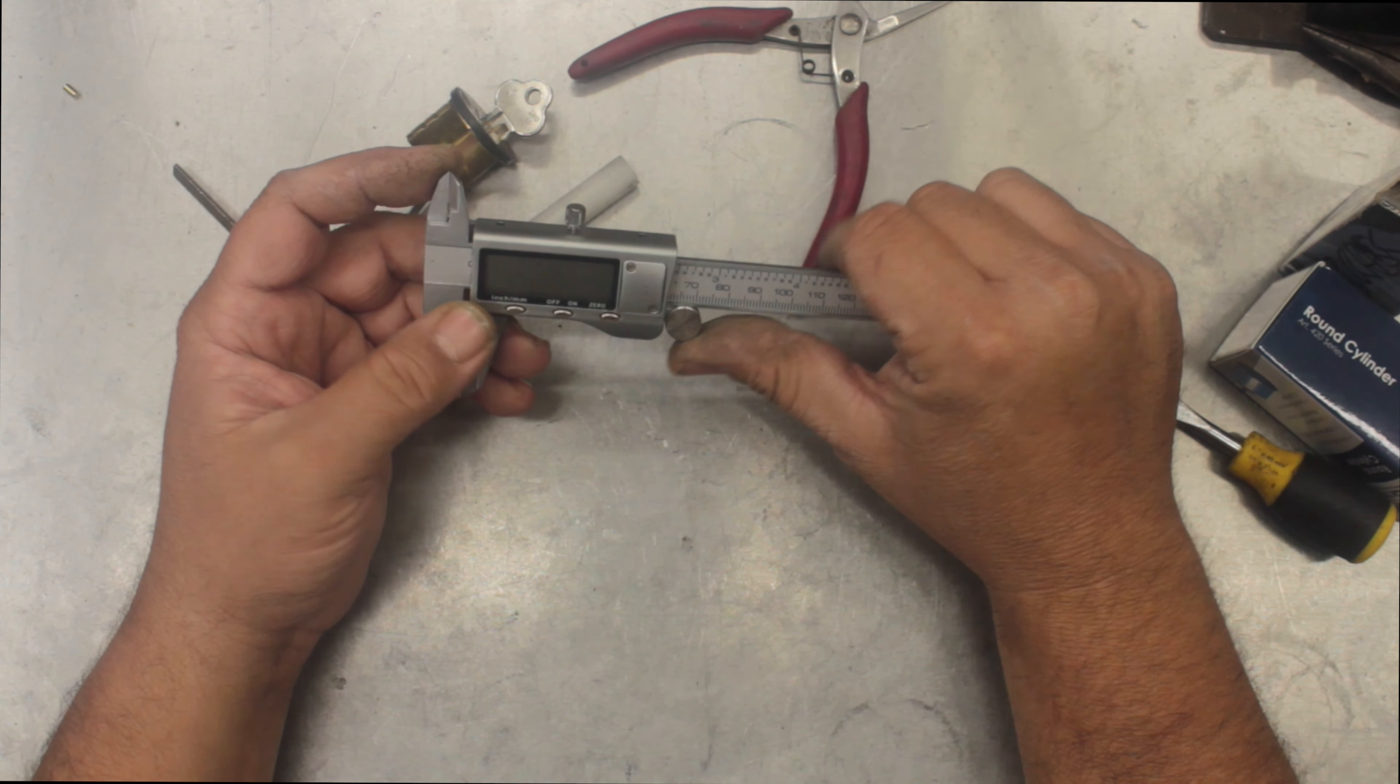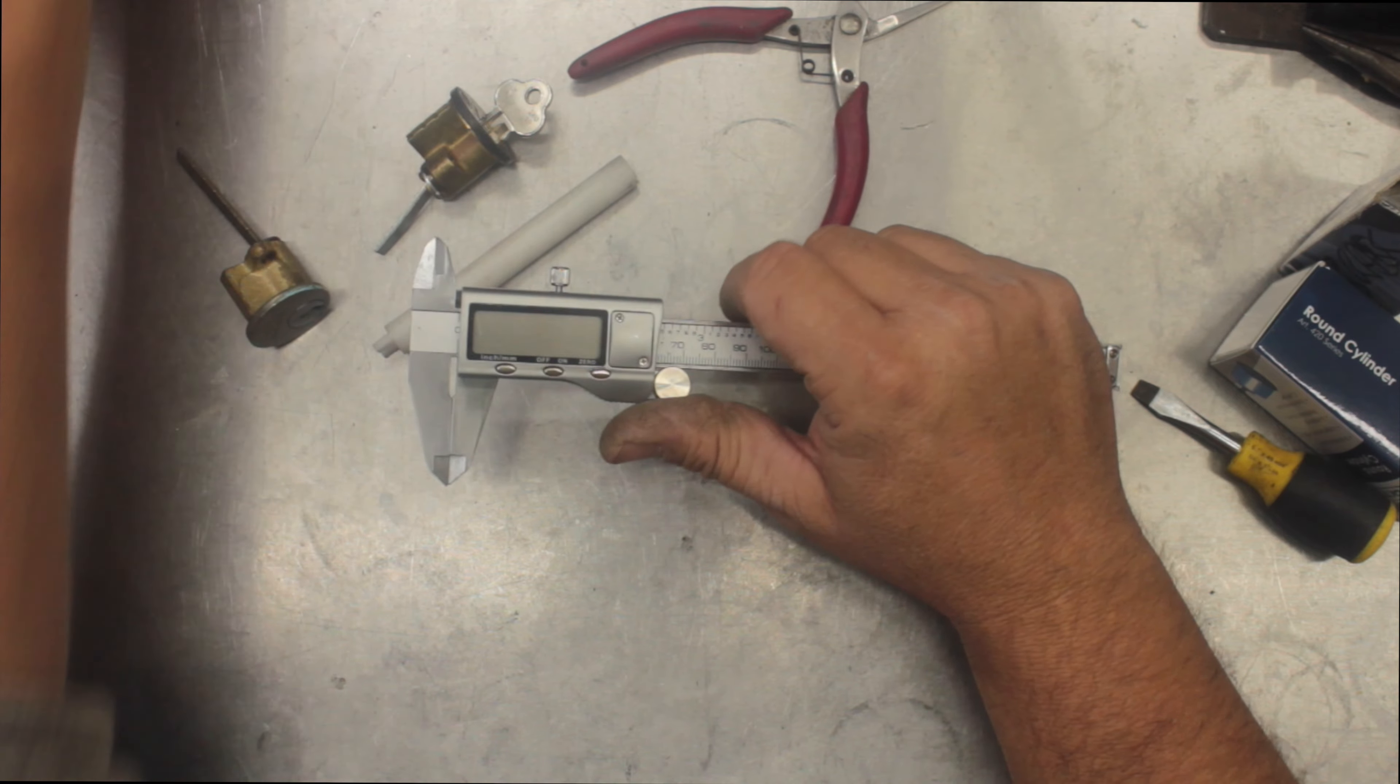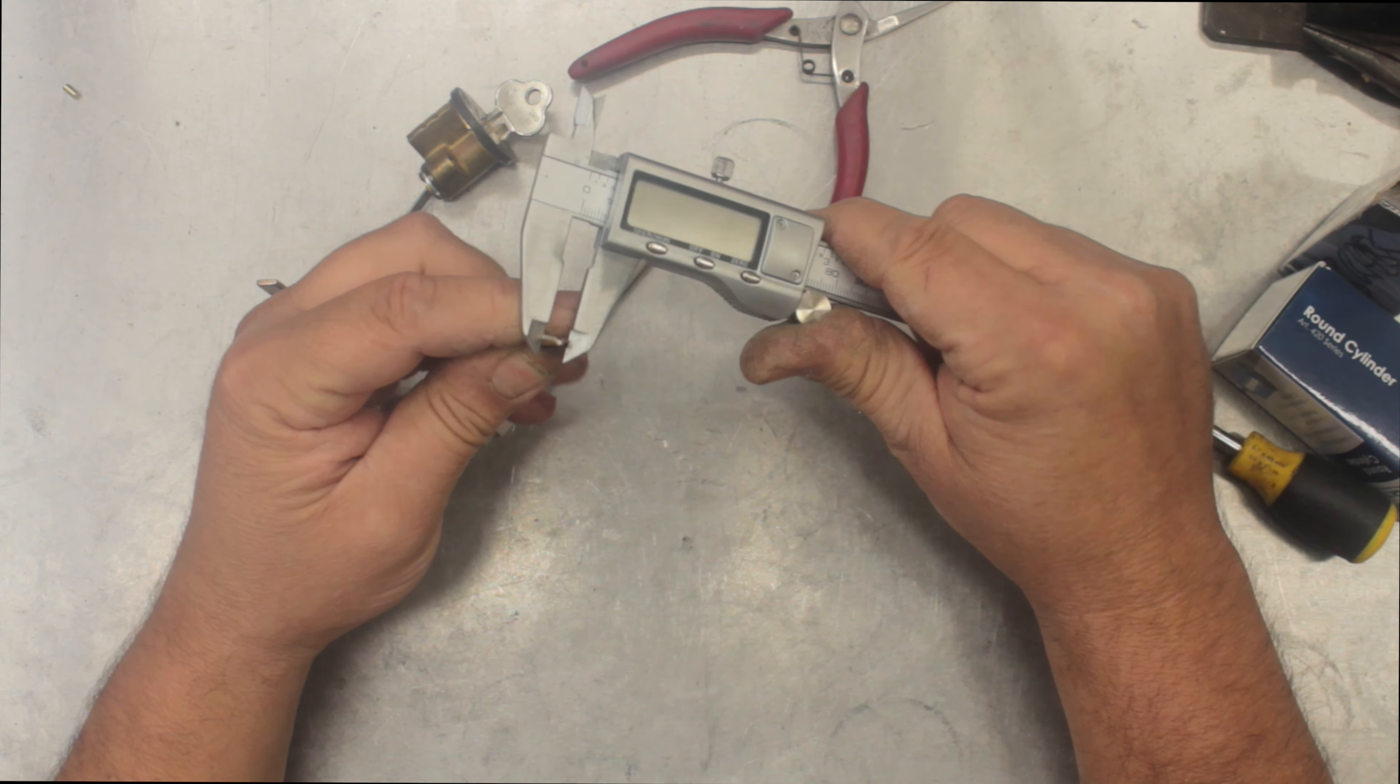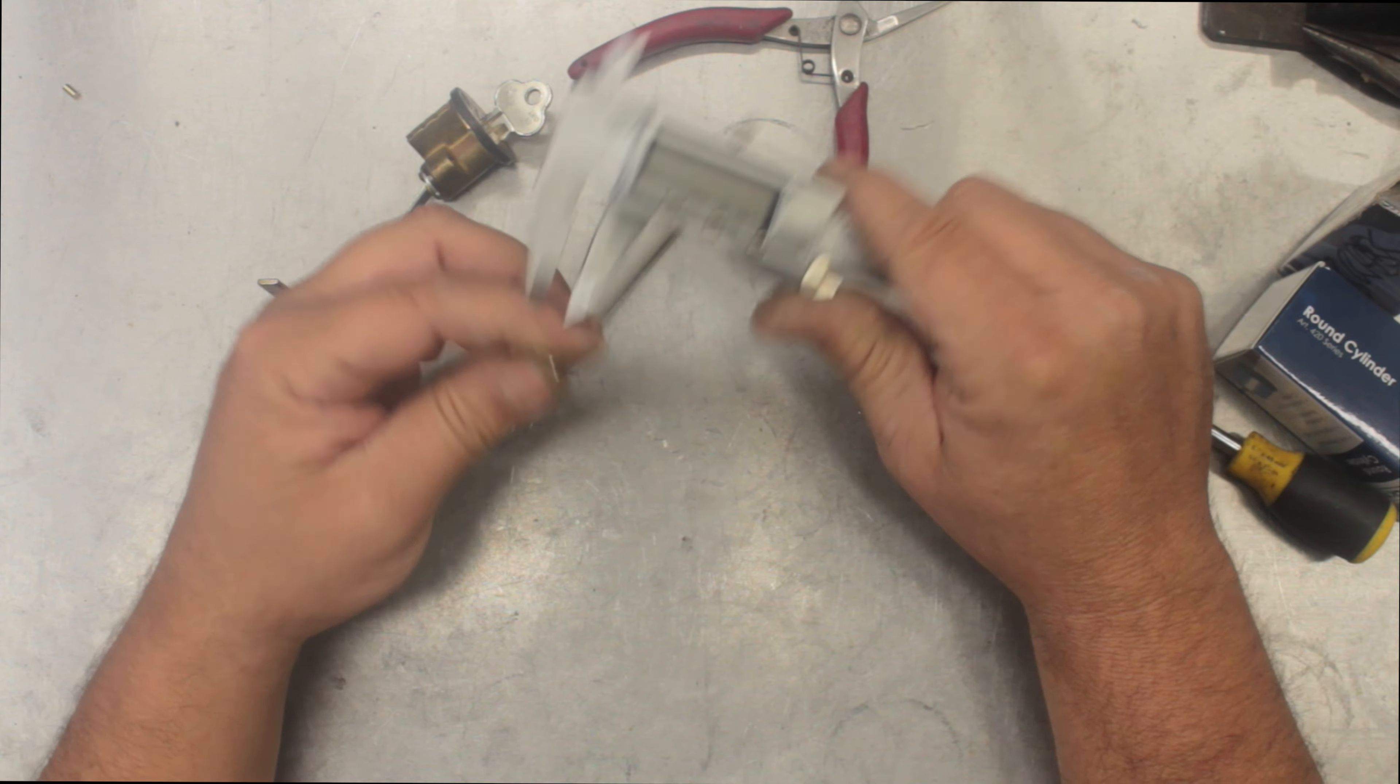So really this would be the go-to tool. When you're measuring keys, it's just so easy. Open it up, put it in the middle of the valley, you can see exactly where you are.